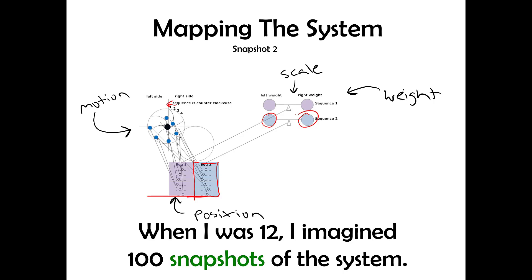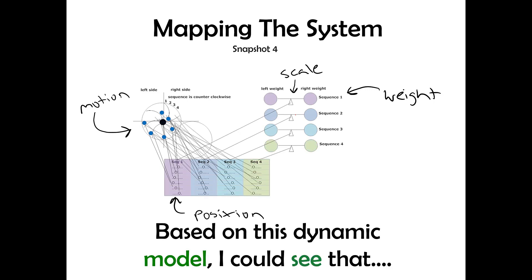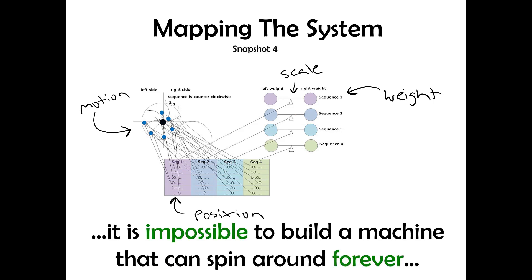When I was 12, I did a hundred snapshots of the system. This allowed me to create a dynamic model just like the one I showed you a couple slides ago. Based on this dynamic model, I could see that it's impossible to build a machine that can spin around forever.